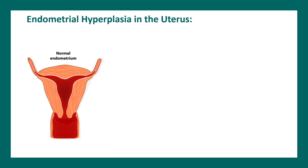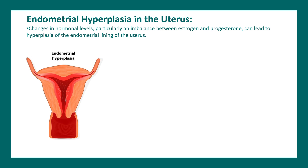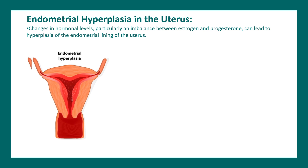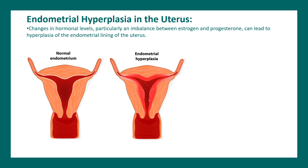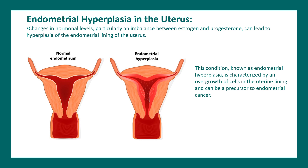There could be pathological hyperplasia, like endometrial hyperplasia in the uterus, where the uterine lining becomes abnormally thick. This happens due to an abnormal balance between progesterone and estrogen, and it is often found to be a predisposition for uterine cancers.